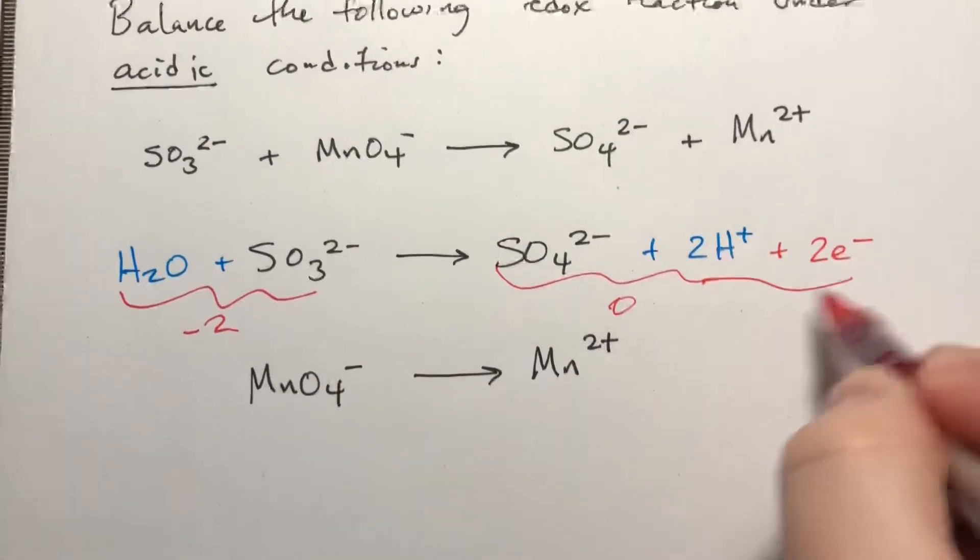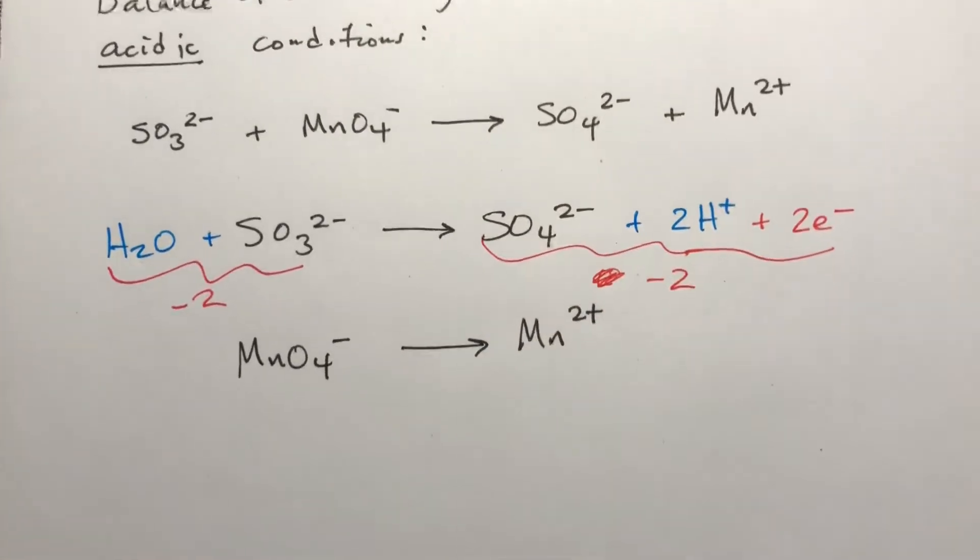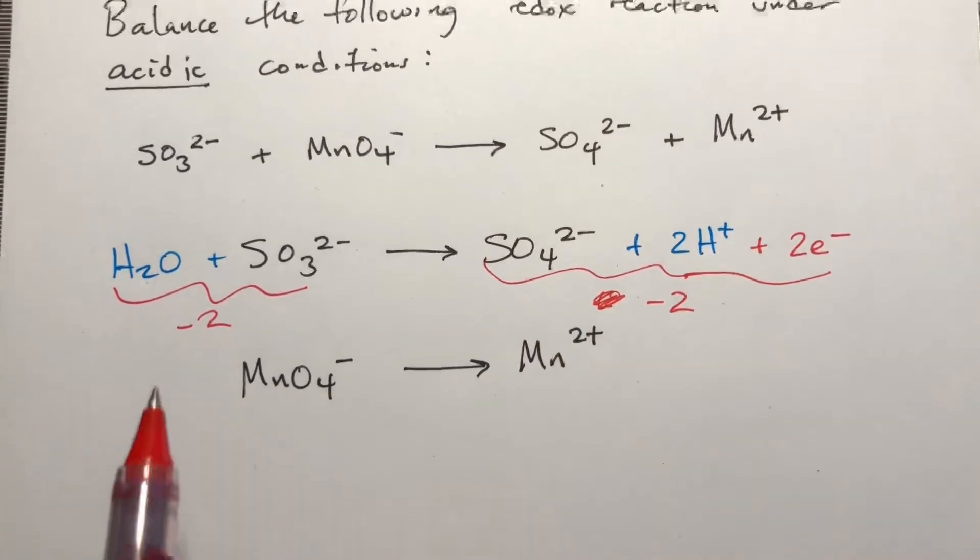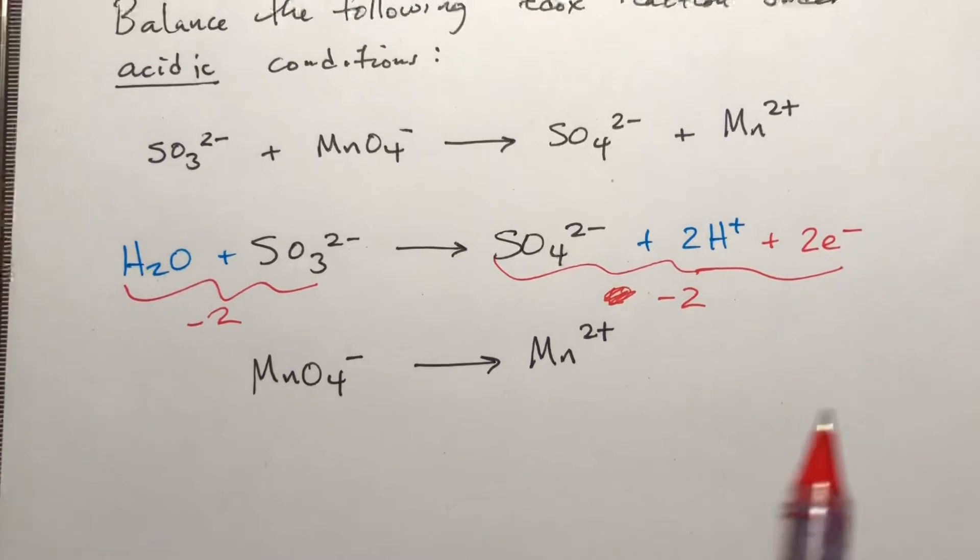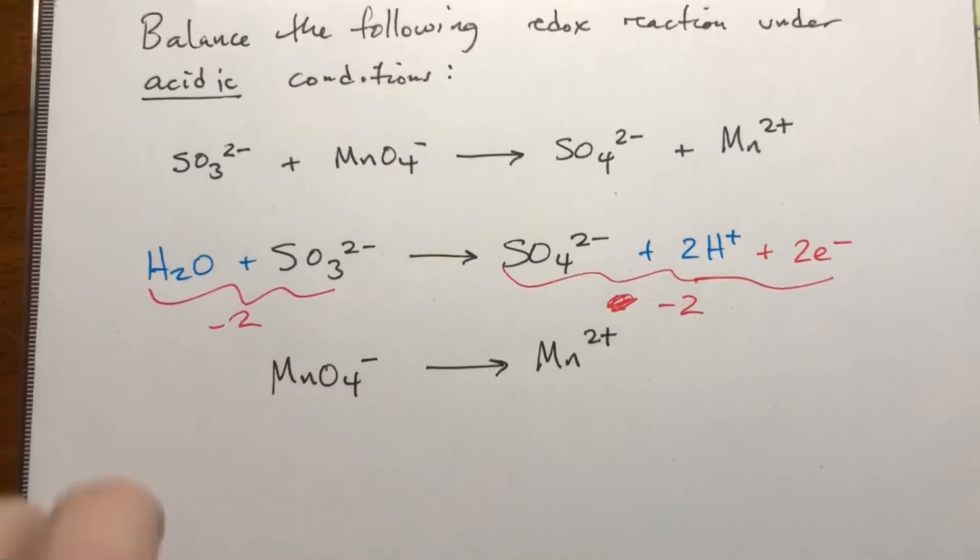So that now, if you include this, this comes out to negative two. So our atoms are balanced and our charges are balanced. So that's one half reaction that is taken care of.